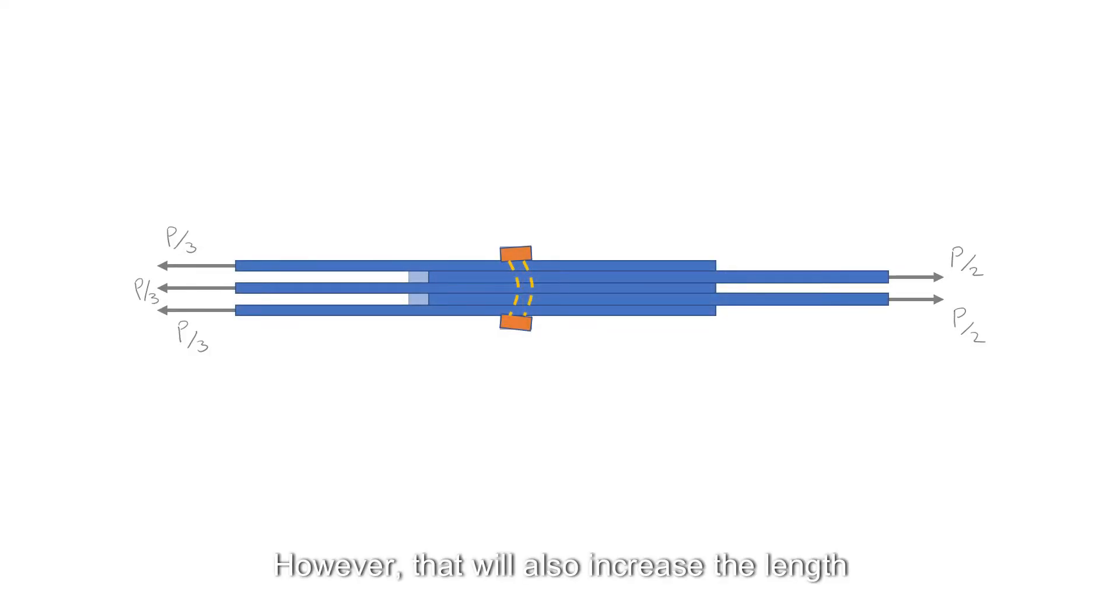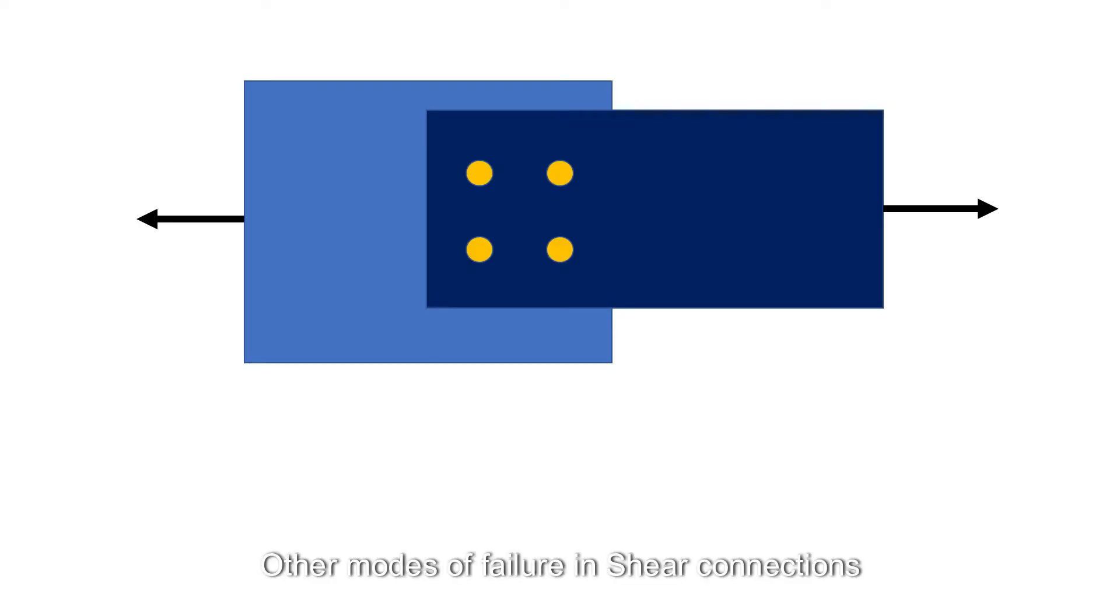However, that will also increase the length of the fastener and could subject it to bending. Other modes of failure in shear connections involve failure of the parts being connected and fall into two general categories. The first being failure resulting from excessive tension, shear, or bending in the parts being connected.